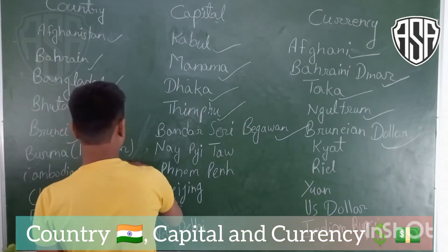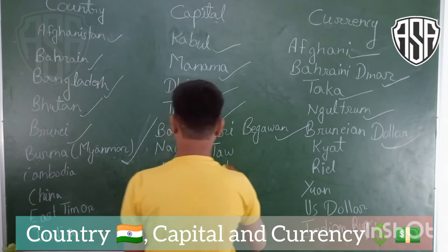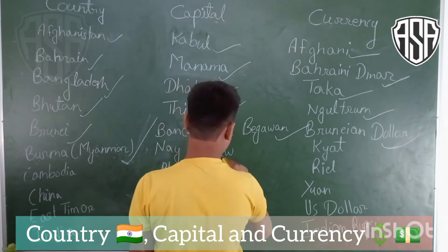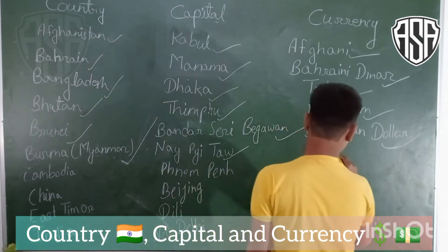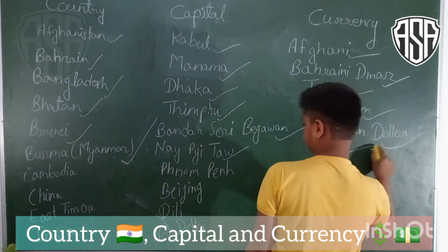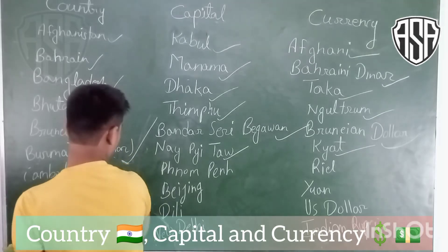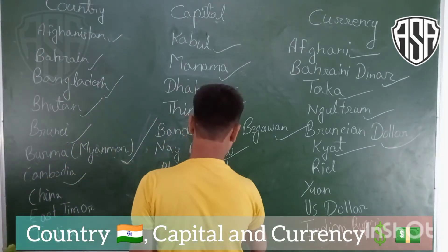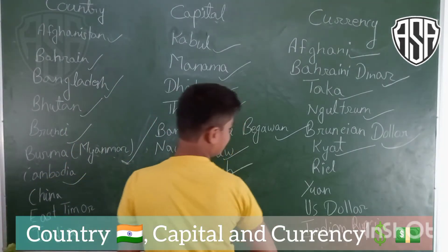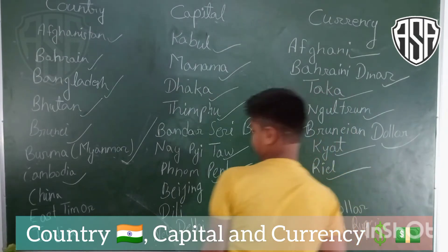Country is Burma, Myanmar. Capital Napitao. And Currency Kya. Country is Cambodia. Capital is Northland. And Currency is Real.